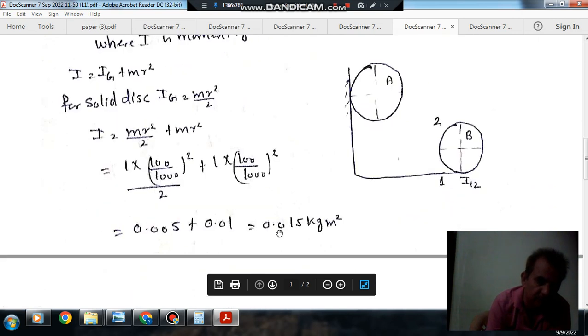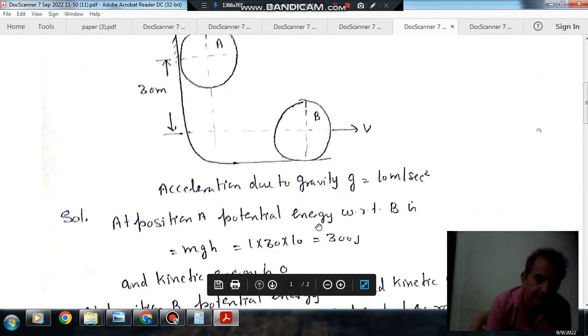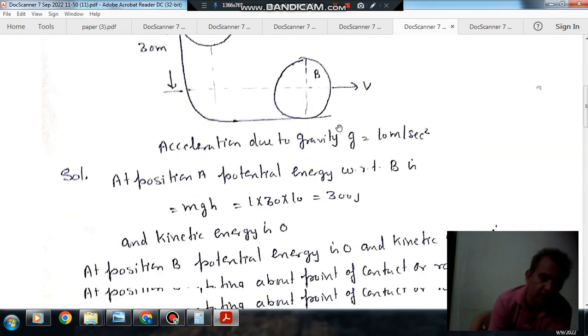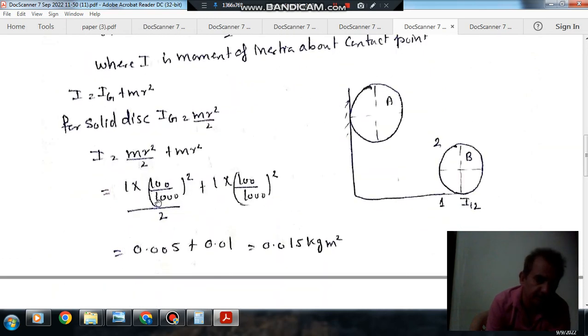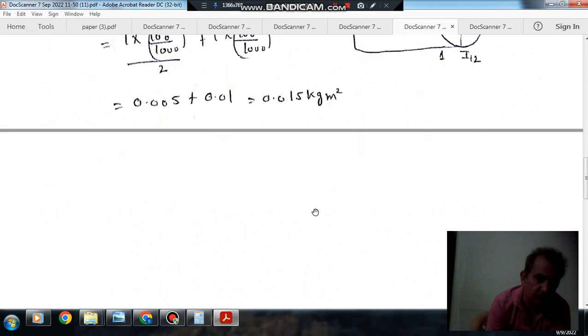So that value comes out as 0.015 kg meter squared. The value of R, the radius of the disk, is given as 100 mm or 100 by 1000 meters. So it is 0.015 kg meter squared.